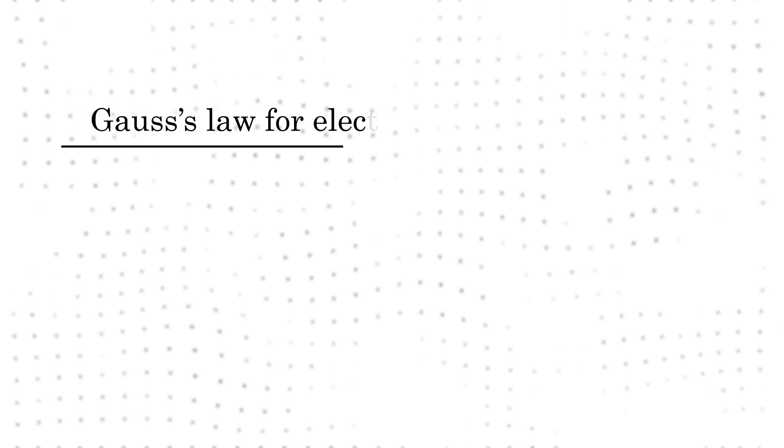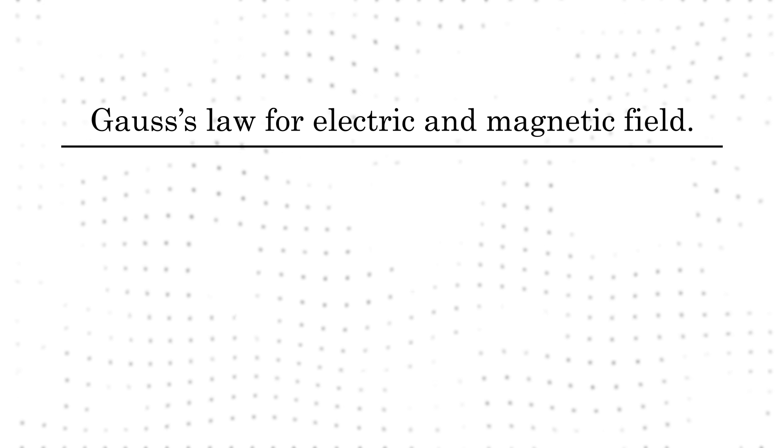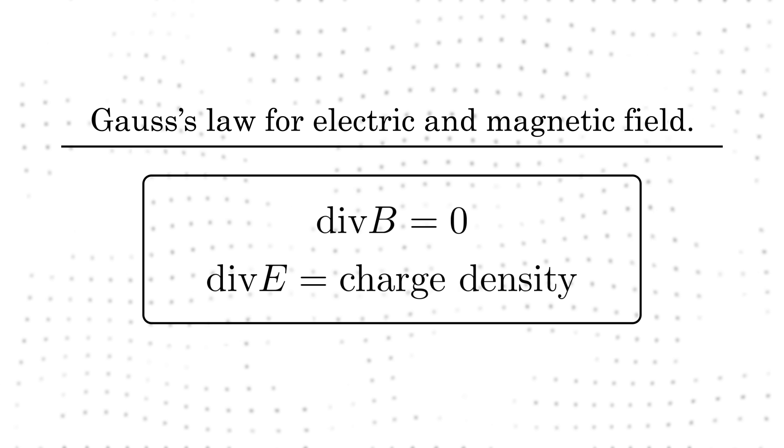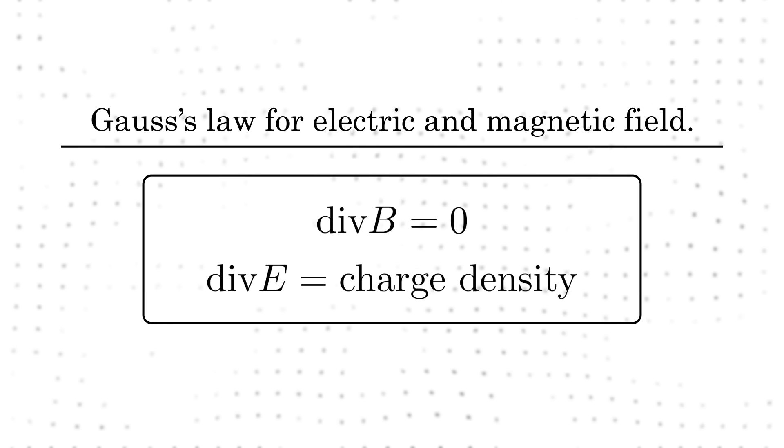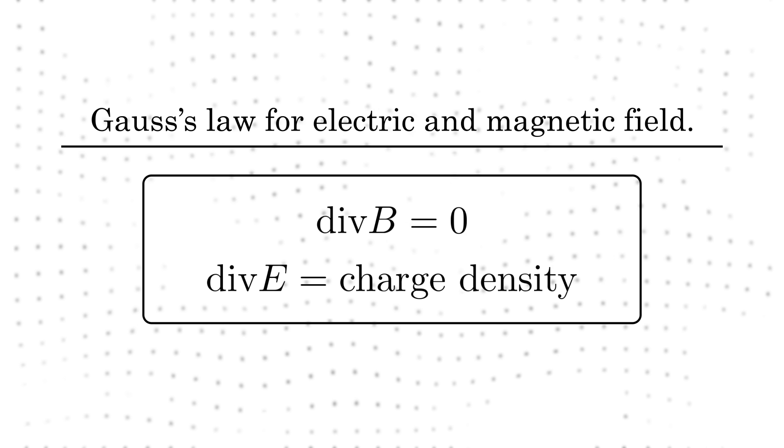These two equations are also called Gauss's law for electric and magnetic fields, though Laplace was the one who first wrote it. I agree, the namings are quite weird. Gauss's law can be used to derive Coulomb's law and vice versa.